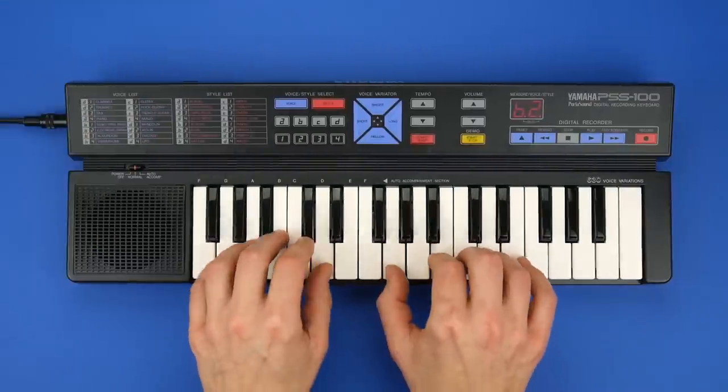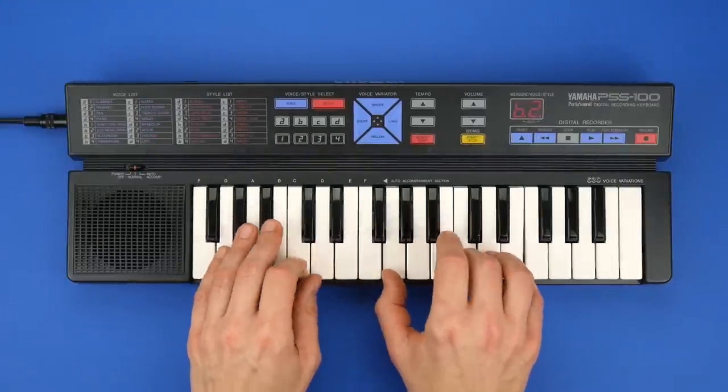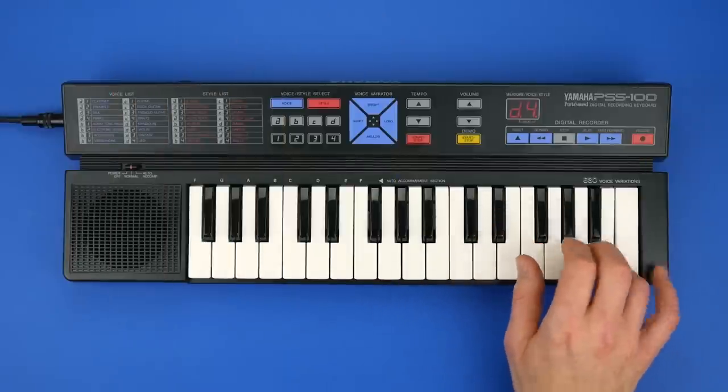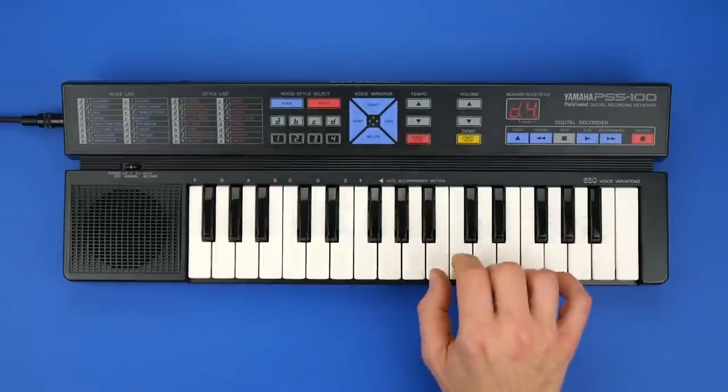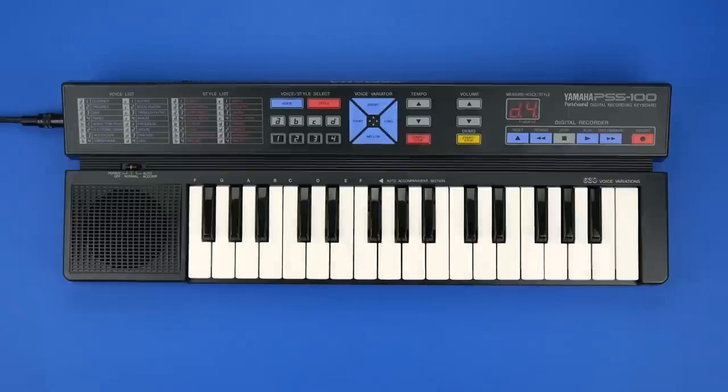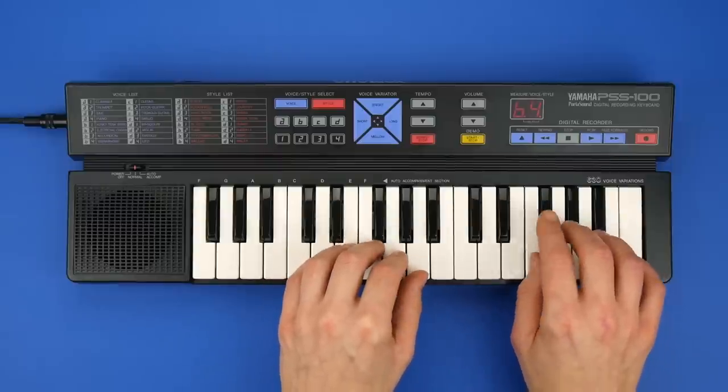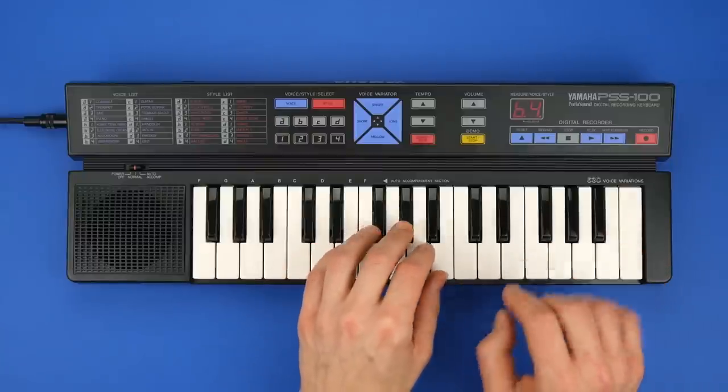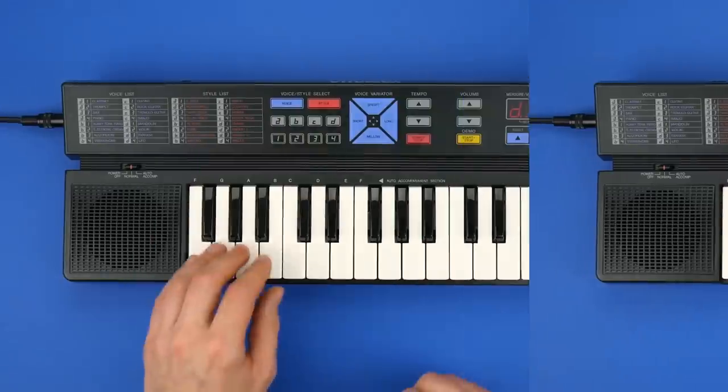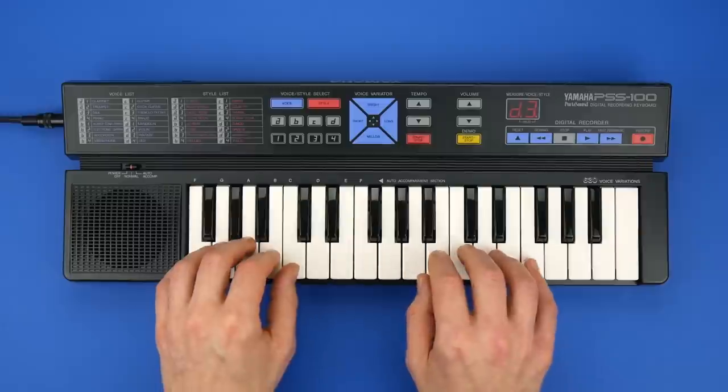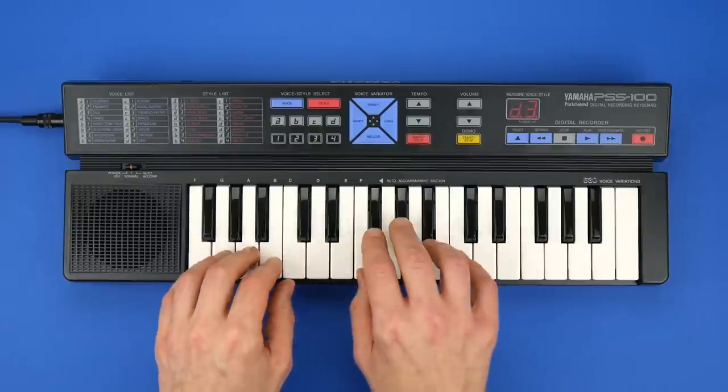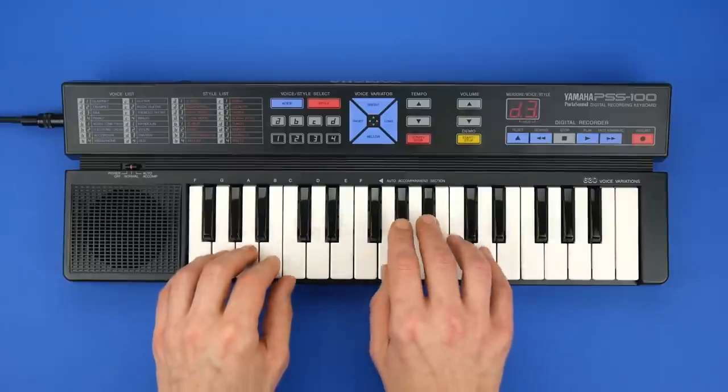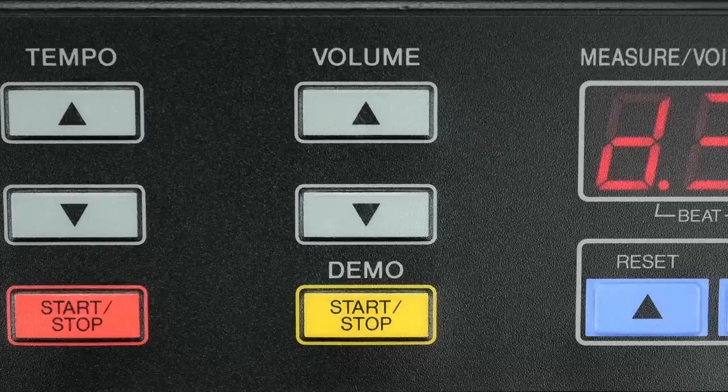Some sounds have a light vibrato. Like trumpet. And electric organ. UFO has the strongest vibrato. And some instruments have a tremolo effect. Like vibraphone.